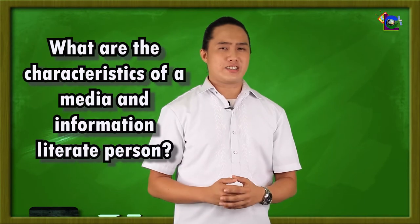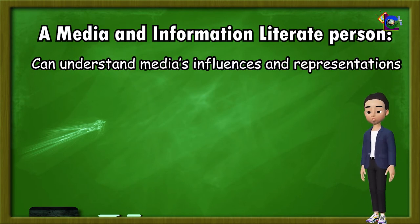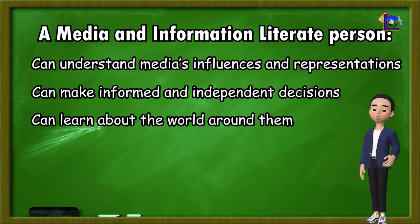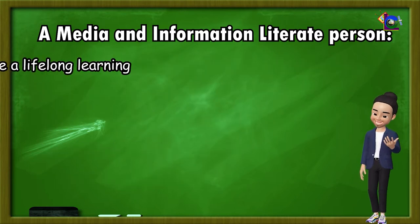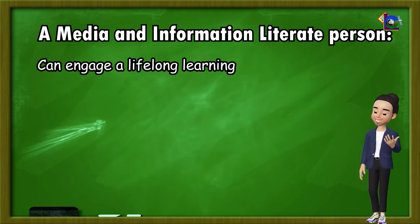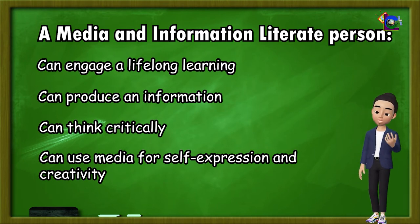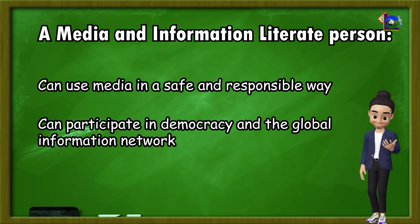But what are the characteristics of a media and information literate person? A media and information literate person can do the following: understand information; understand media's influences and representations; make informed and independent decisions; learn about the world around them; build a sense of community; maintain public discourse; engage in lifelong learning; produce information; think critically; use media for self-expression and creativity; use media in a safe and responsible way; and participate in democracy and the global information network.